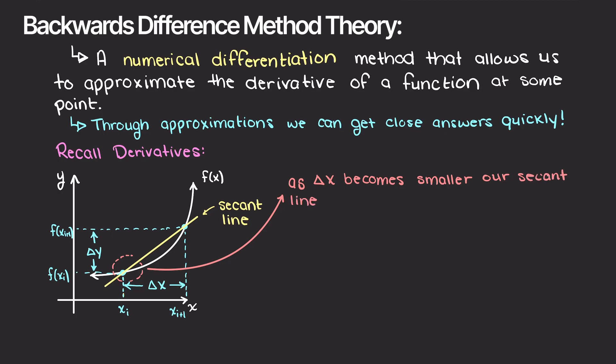As we learned in calculus, as our delta x term gets smaller and smaller, our secant line begins to approximate the tangent line at the input of xi which is the derivative as the limit goes to zero. This line then becomes the instantaneous rate of change at point x.